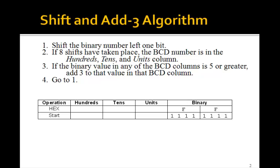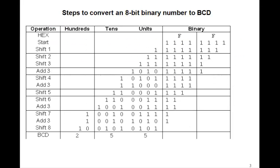Now remember our shift and add algorithm that we had in Lesson 32, where we shift the binary number left one bit, and if eight shifts have taken place, this shows an 8-bit one, then the BCD number will be in the hundreds, tens, and units. And you remember if the binary value is greater than or equal to 5, then we add 3. And we showed how this went for an 8-bit number, FF. We went through those details.